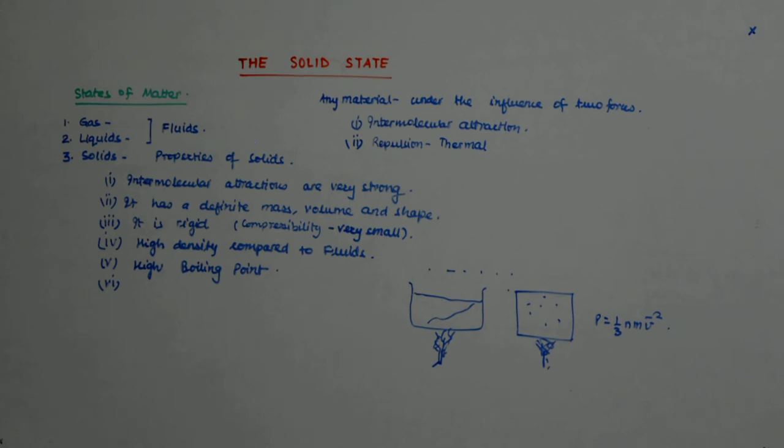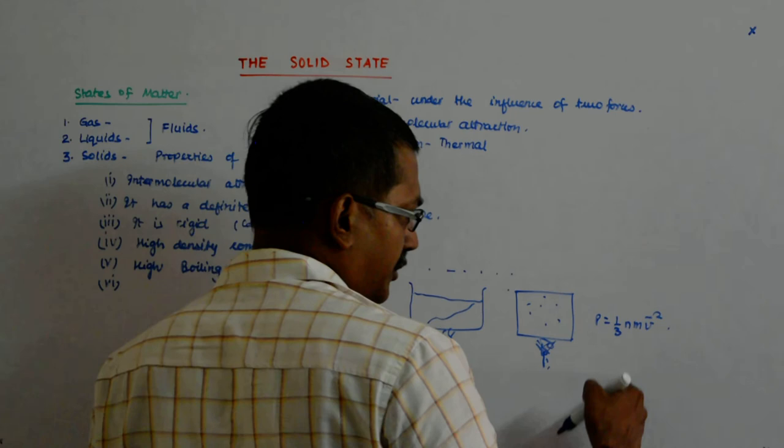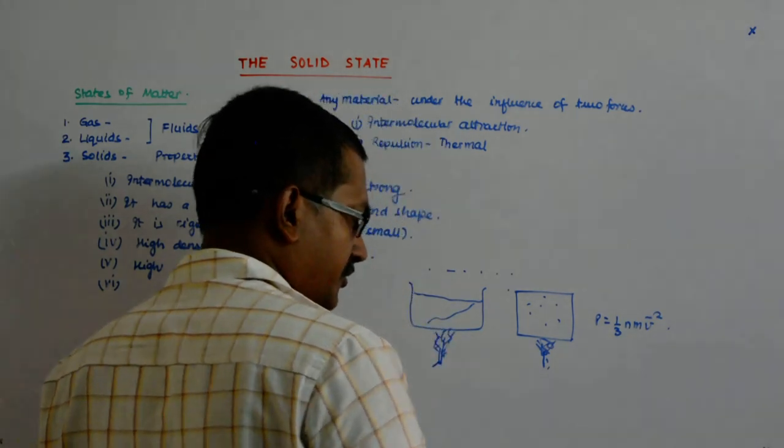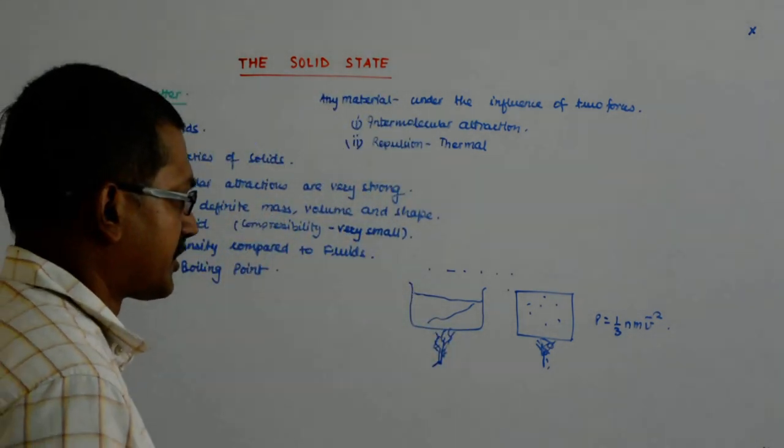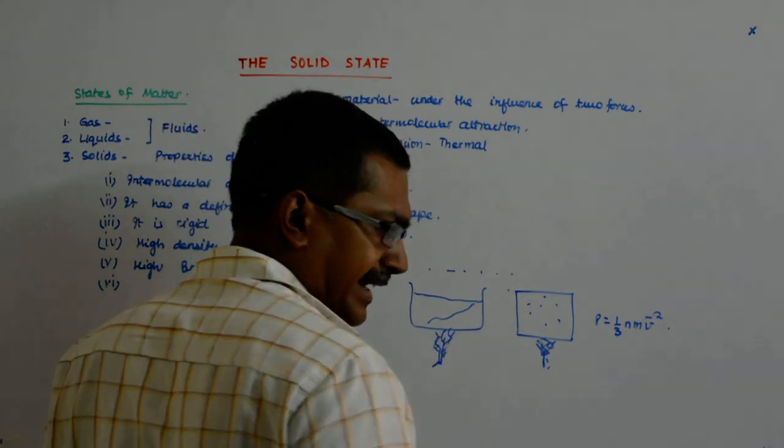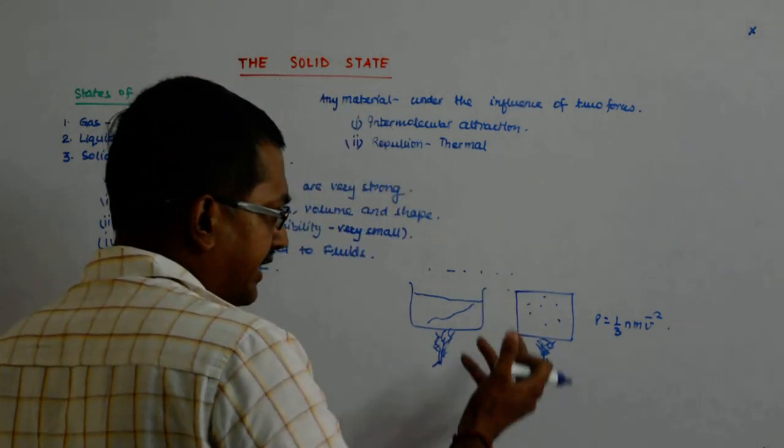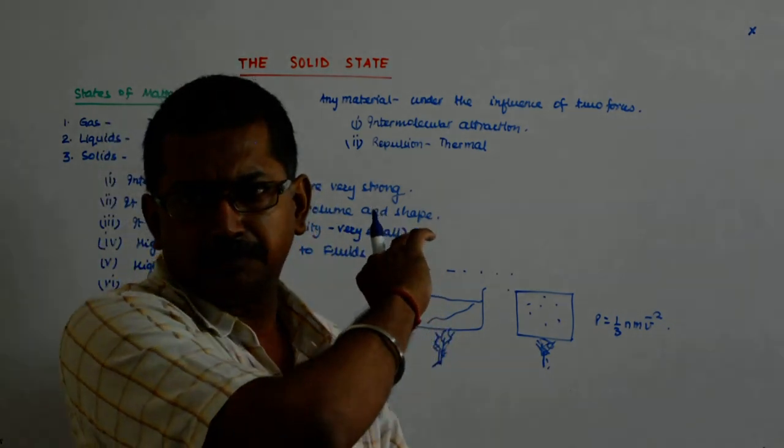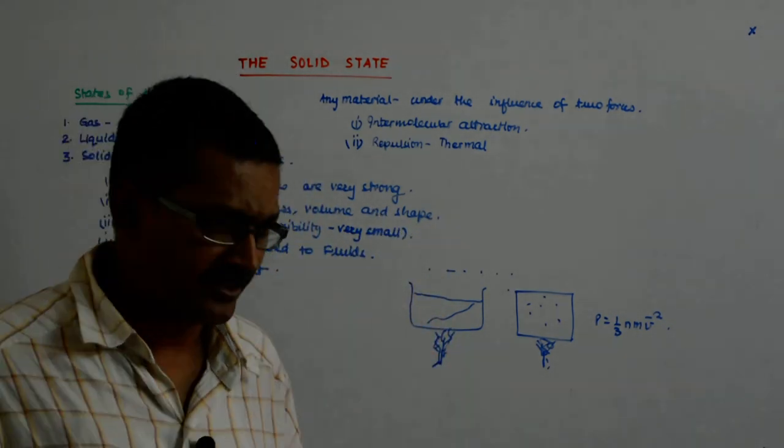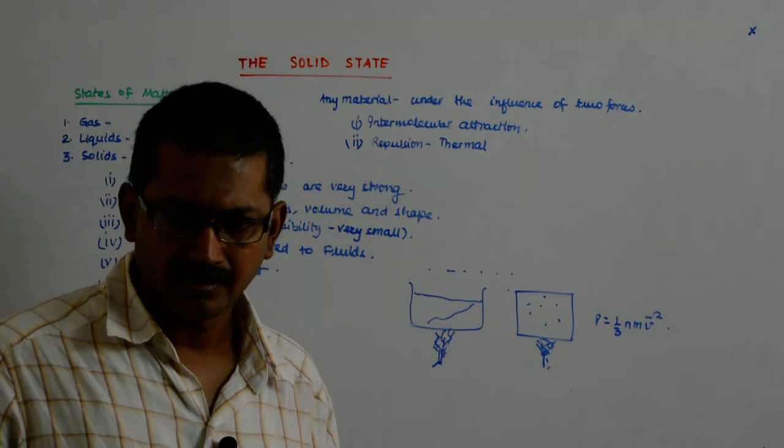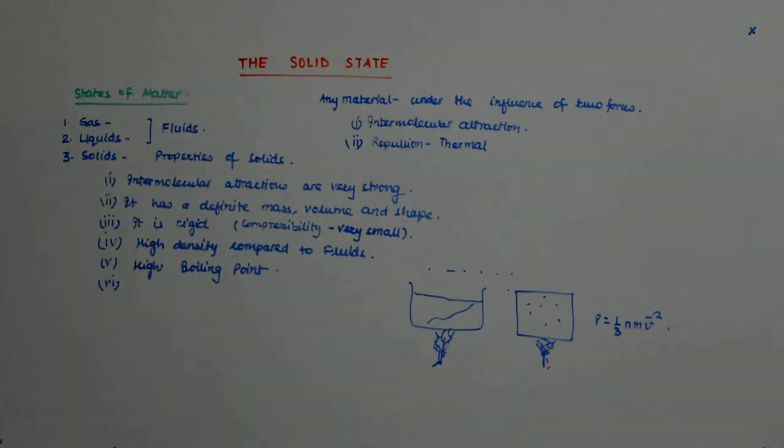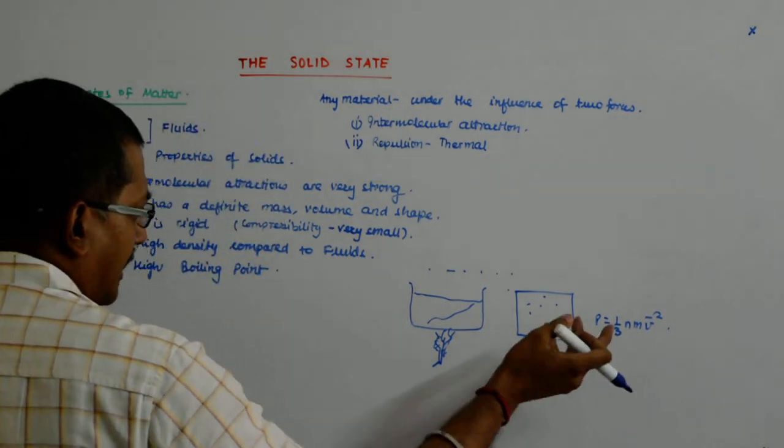This is the pressure, where n is the number of molecules per unit volume, m is the mass of one molecule, v bar is the velocity. Now, the faster it hits the wall and rebounds, more is the force it generates. So if you start heating it, the particles start moving very fast and that is how it goes.